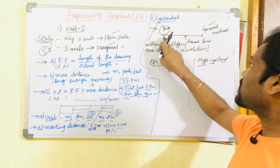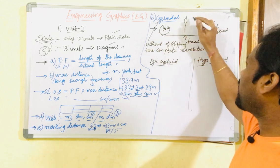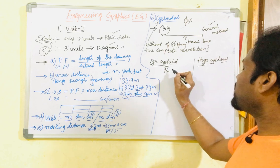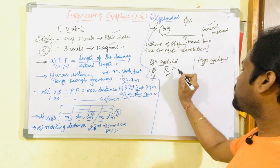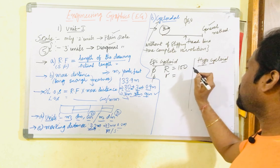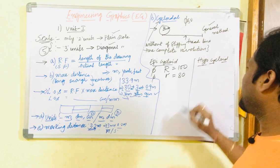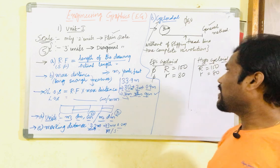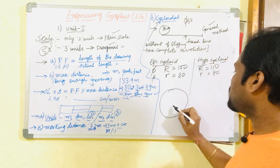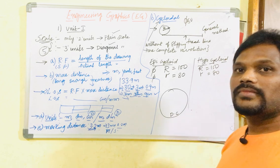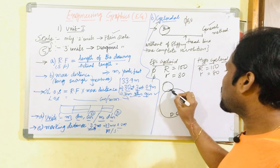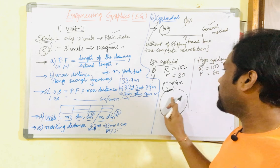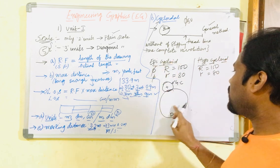For epicycloid and hypocycloid, two radii or two diameters are provided — one for the generating circle and one for the directing circle. The bigger circle is called the directing circle, and the smaller circle that moves upon its circumference is called the generating circle. A typical epicycloid question: 'A circle of diameter 50 or 60 rolls upon another circle for one complete revolution without slipping.'